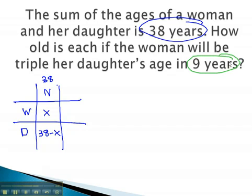Here, the change in time is 9 years. We're adding 9 years into the future. This gives us x plus 9, and 47 minus x.